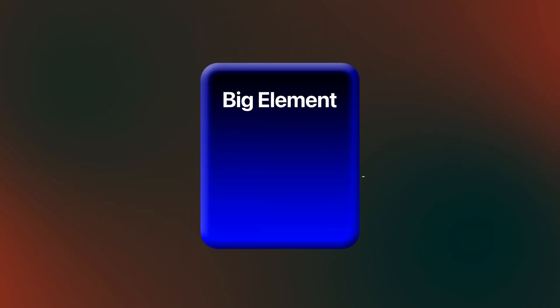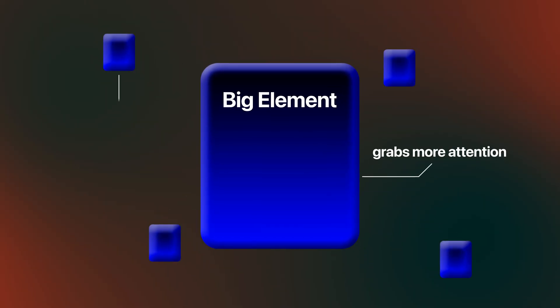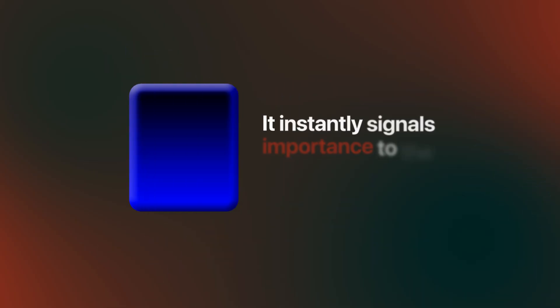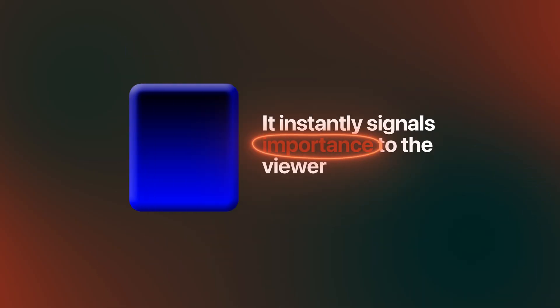Bigger elements grab more attention. Smaller elements carry less visual weight. And when you animate size changes, like zooming in on a shape or text, it instantly signals importance to the viewer. Think of scale as a spotlight — you're choosing where the eye should go first. But what if everything needs to be the same size and color? That's where the next rule saves you.